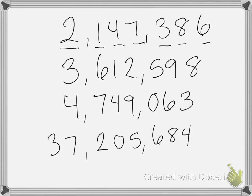Now we can say that because we have the two in the millions place. The one is in the hundred thousandth place. The four is in the ten thousands place. Seven is in the one thousandth place. Three is in the hundreds. Eight is in the tens. And six is in the ones place.